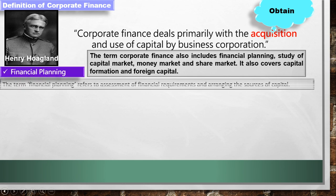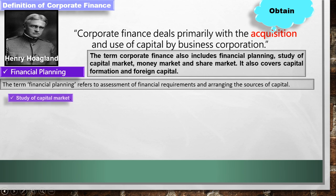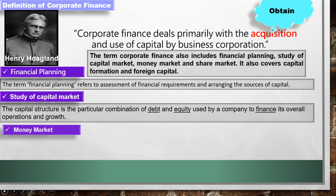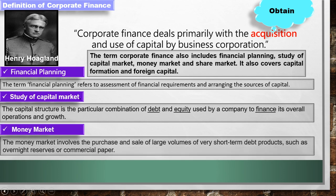1. Financial planning: The term financial planning refers to assessment of financial requirements and arranging the sources of capital. 2. Capital market: The capital structure is the particular combination of debt and equity used by a company to finance its overall operations and growth. 3. Money market: The money market involves the purchase and sale of large volumes of very short-term debt products such as overnight reserves or commercial paper.